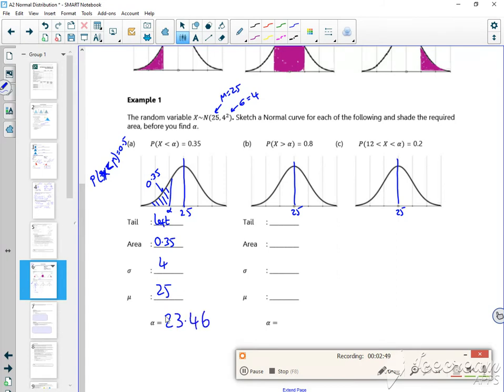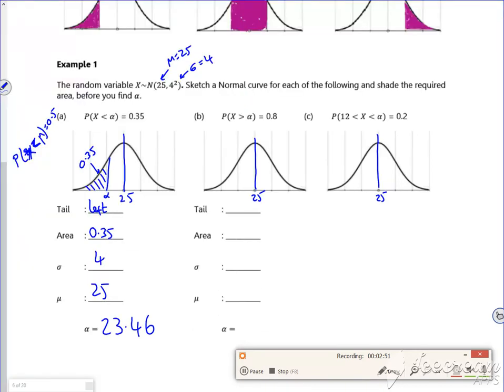Now this next one - think about this. Greater than, so I'm looking at a right hand tail now. That's 0.8, so if that's bigger than a half, it must go past the mean because of the symmetry. This value here is my alpha value, but I want this area which is 0.8.